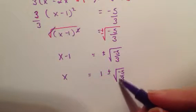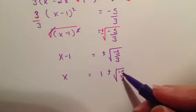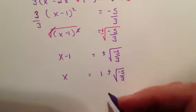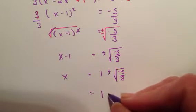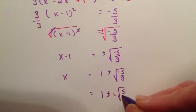For those of you that know imaginary numbers, this negative under the radical has to come out and it's an imaginary number. So I'm going to have 1 plus or minus i square root of 5 thirds.